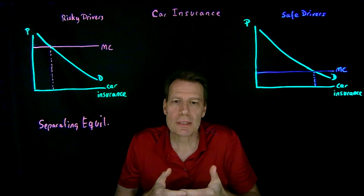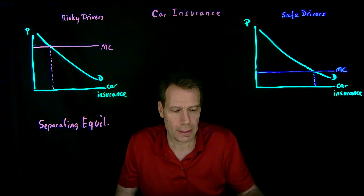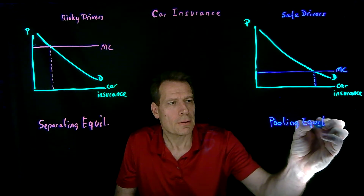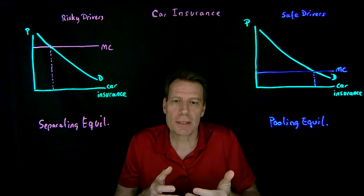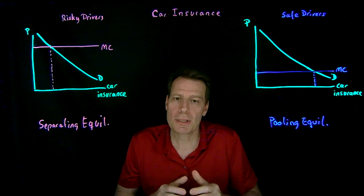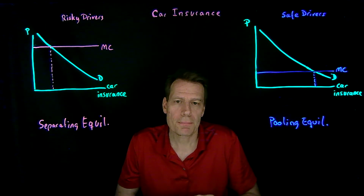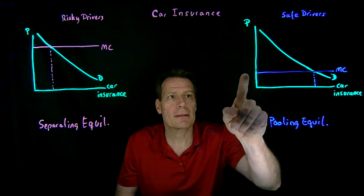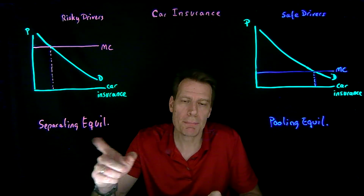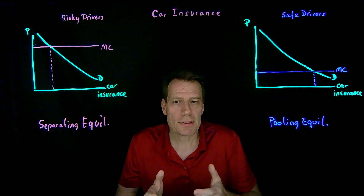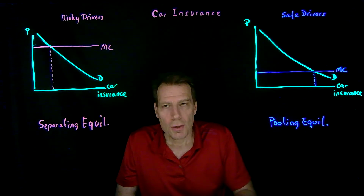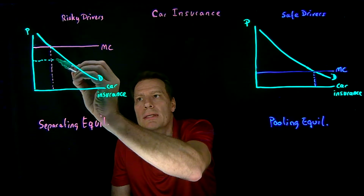If we can't tell the difference, we're going to have to treat them all the same as part of the same pool — we call that a pooling equilibrium. In a pooling equilibrium, we're going to end up charging a single price for car insurance. If the industry is competitive, that'll be a zero-profit price, ending up between the two prices we would charge in a separating equilibrium, because we're going to get some safe drivers and some risky drivers buying insurance. So things average out to a zero-profit price.